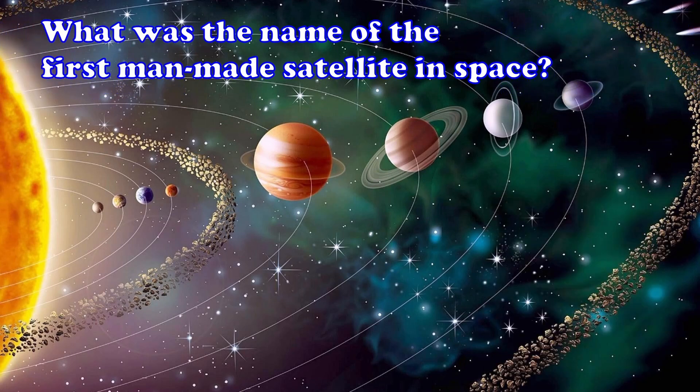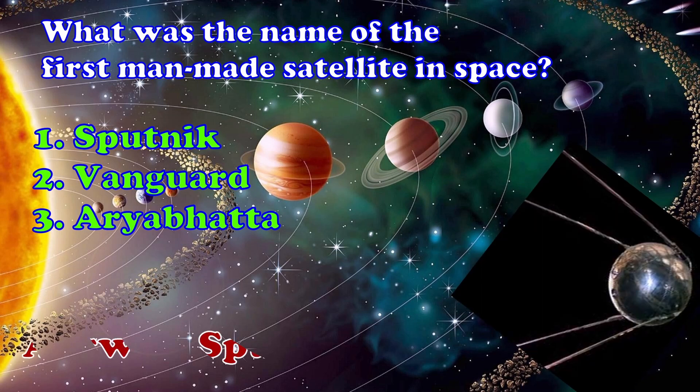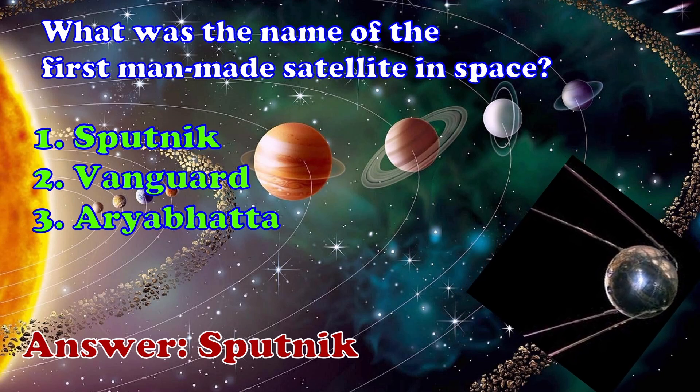What was the name of the first man-made satellite in space? 1. Sputnik, 2. Vanguard, 3. Aryabhata. The answer is Sputnik.